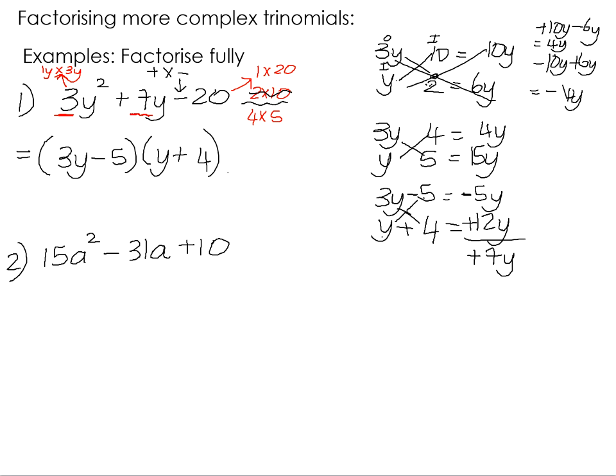If we look at the second one here, this one is a little bit more complex because the first term of 15, we could have actually had it as 1 times 15 or we could have had it as 3 times 5. If we want to think about our last term, 10 could have been 1 times 10 or it could have been 2 times 5. The sign on the 10 is positive, so it must have been a plus times a plus or a minus times a minus.